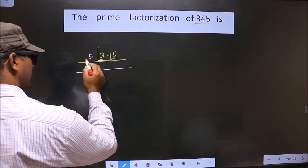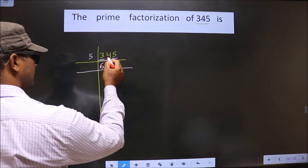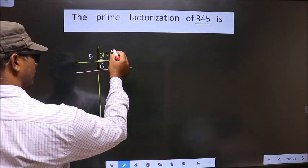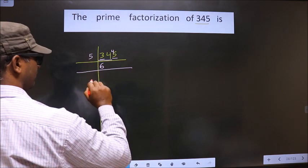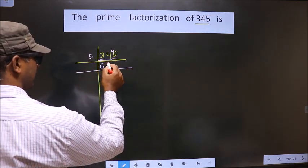Closer to 34 in the 5 table is 5×6=30. 34 minus 30 is 4, carried forward making it 45. When do you get 45 in the 5 table? 5×9=45.